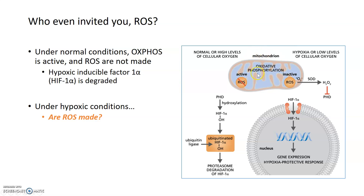Under normal conditions, ROS is not generated because oxidative phosphorylation is active. As we discussed before, the making of ATP through aerobic respiration depletes the formation of ROS. And there's also some signaling involved: when ROS is not made, a particular factor called HIF1A is degraded. HIF1A provides protection under hypoxic or anaerobic conditions when oxygen is low. So when oxygen is high and oxidative phosphorylation is happening, no ROS is generated and HIF1A is degraded because there's no need to respond to a low oxygen environment.